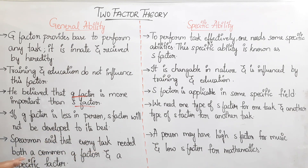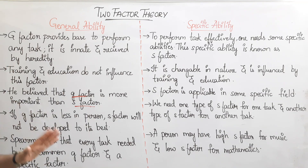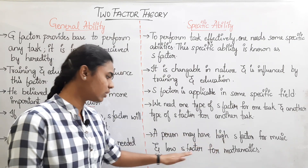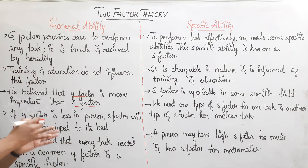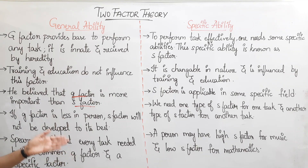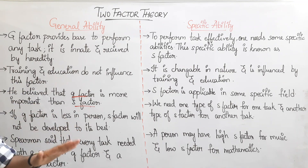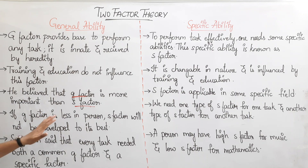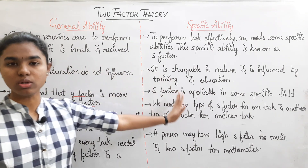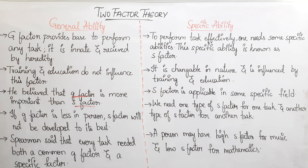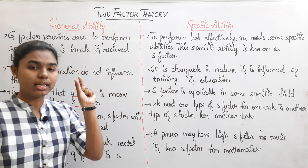Spearman said that every task needs both a common G-factor and a specific S-factor. A person may have a high S-factor for music and a low S-factor for mathematics. In two-factor theory, the G-factor is for general tasks and the S-factor is for particular tasks.